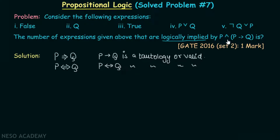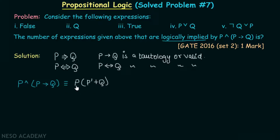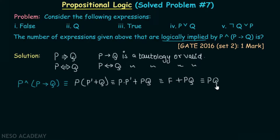Let's try to minimize the expression p AND (p implies q). This is equivalent to p AND (NOT p OR q). Applying the distributive property: (p AND NOT p) OR (p AND q). Since p AND NOT p is false, we get false OR pq, which equals pq. So p AND (p implies q) is logically equivalent to pq.